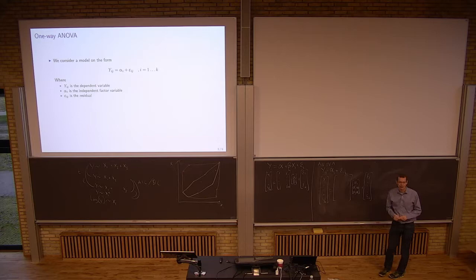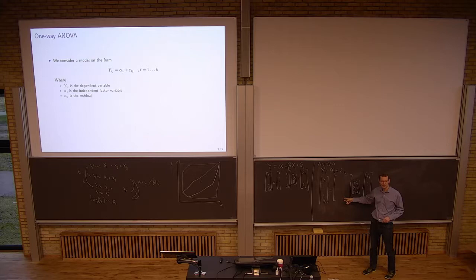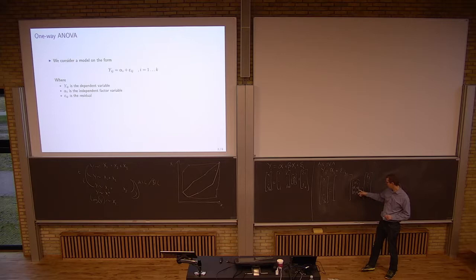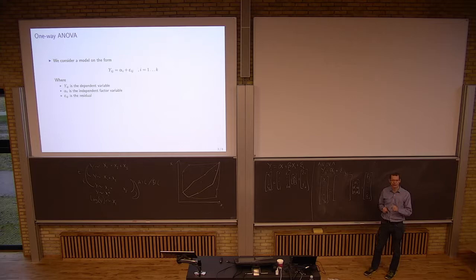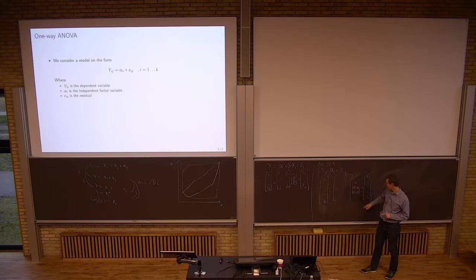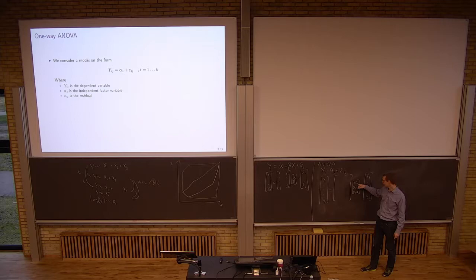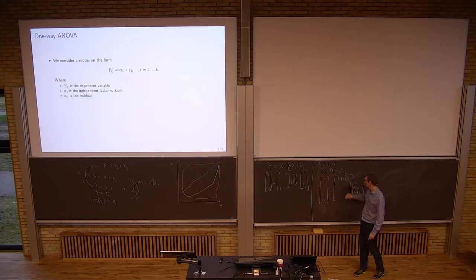If this is the case, what do I need to fill in here in order to estimate alpha 1, alpha 2, and alpha 3? Zeros and ones, exactly. Coding for what do I want. So if the first observation is from alpha 1, then I have a 1 and a 0 and a 0. So this corresponds to alpha 1.